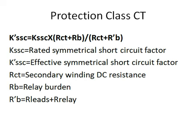In this formula, Rct is the CT secondary winding resistance at 20 degrees centigrade, Rb is the relay burden, and Rb_dash is the lead resistance plus the relay resistance.